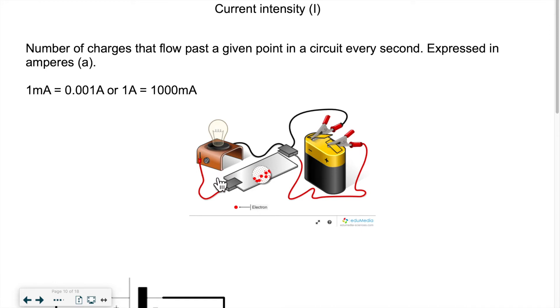within the circuit. If we could measure the amount of particles of charges that circulate per amount of time, that would be called current intensity.